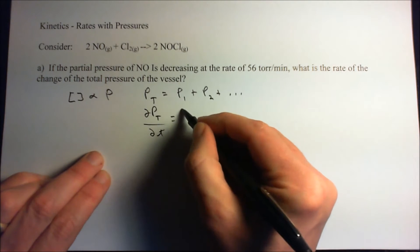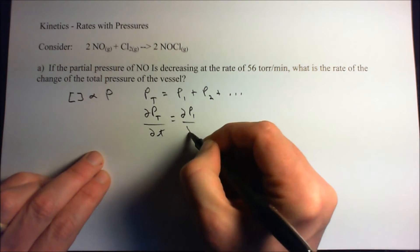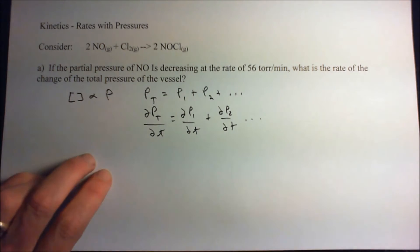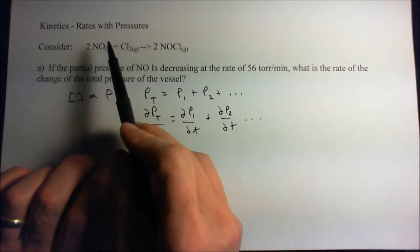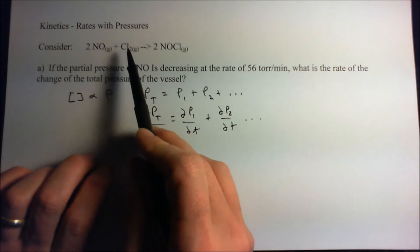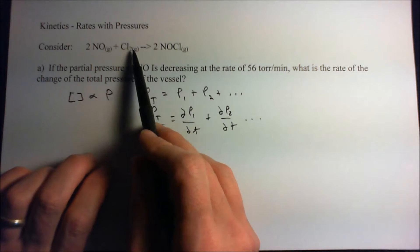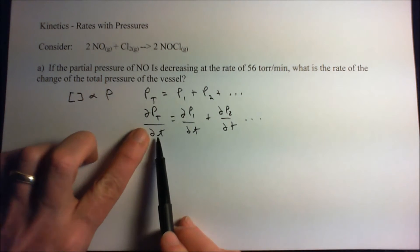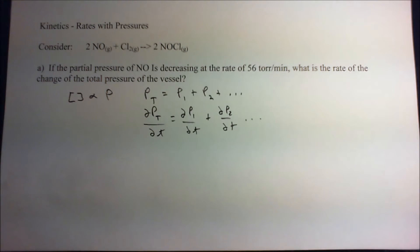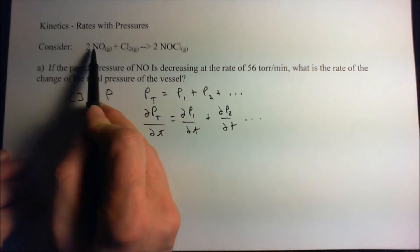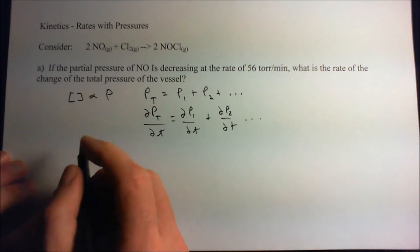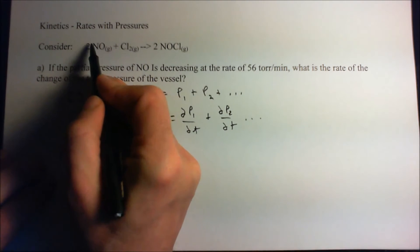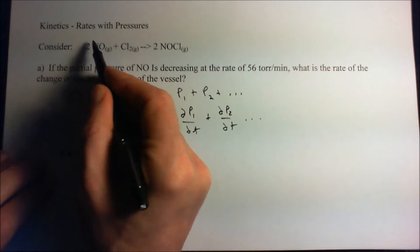Therefore, if the total pressure is given by each individual gas, then the change of pressure—the total with respect to time—is going to be equal to the sum of all the other ones changing with time. What we need to do is figure out what the other changes in pressure per unit time are for the other two components. Since this is true, we can get the change of the total pressure just by adding up the different rates.